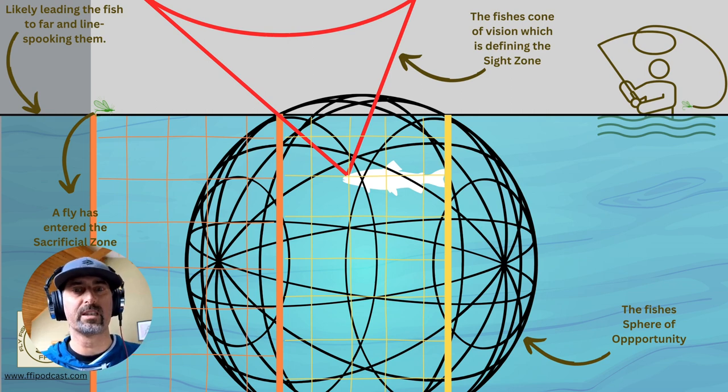That's what we're doing—we're building in this window ahead of the conical vision of the fish, so that your drift is drifting smooth, coming into the fish's vision smooth.